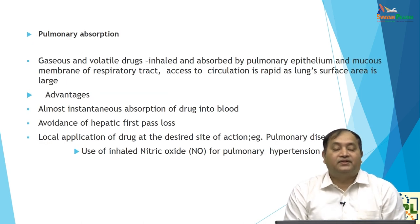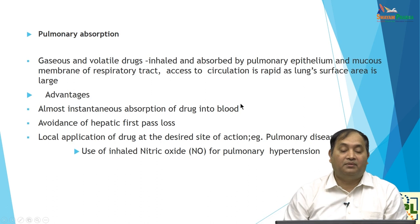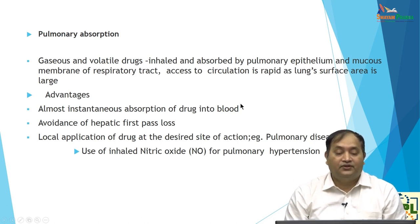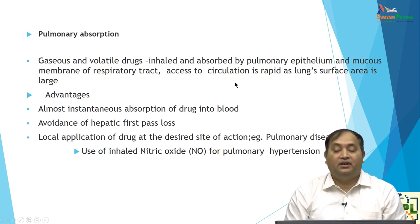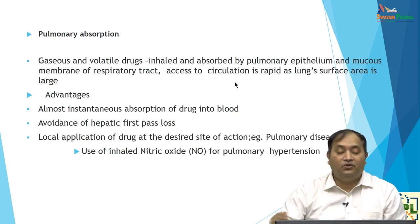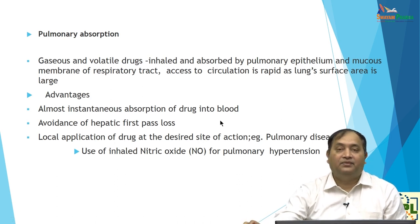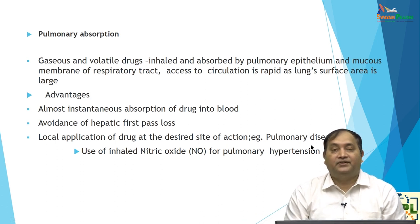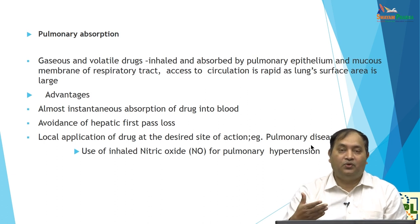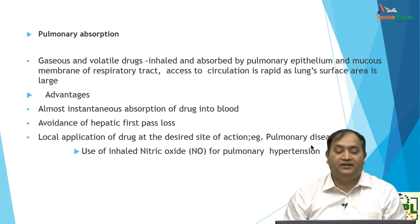Pulmonary absorption: the drug is given by inhalation — gaseous or volatile (like inhalation anesthetics). Inhaled drug is absorbed through the pulmonary epithelium and mucous membrane via the respiratory tract and accesses the circulation very rapidly because the lung surface area is very large. Absorption is almost instantaneous into the blood and it bypasses hepatic metabolism. This is used for local action in pulmonary disease — for example, nitric oxide for pulmonary hypertension, which is a potent vasodilator.